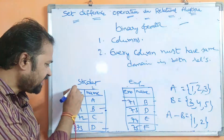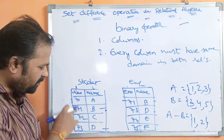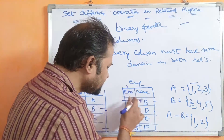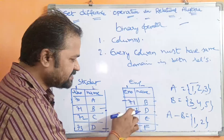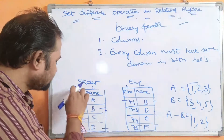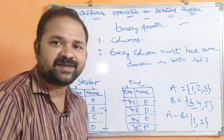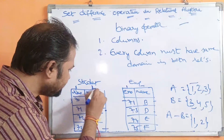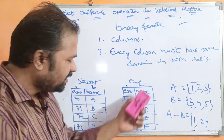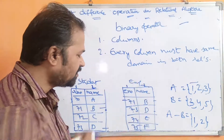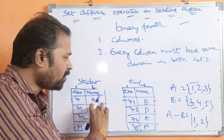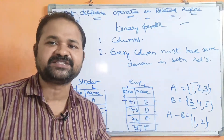Considering the first column of the student relation, the values 70, 71, 72, 73 are integers. The first column of the employee relation — 71, 73, 74, 75 — also contains integer values, so the first columns of both relations share the same domain: integer. Similarly, the second column (name) of the student relation contains characters A, B, C, D, and the employee relation's second column contains B, D, E, F — also characters. So both columns share the same domain.